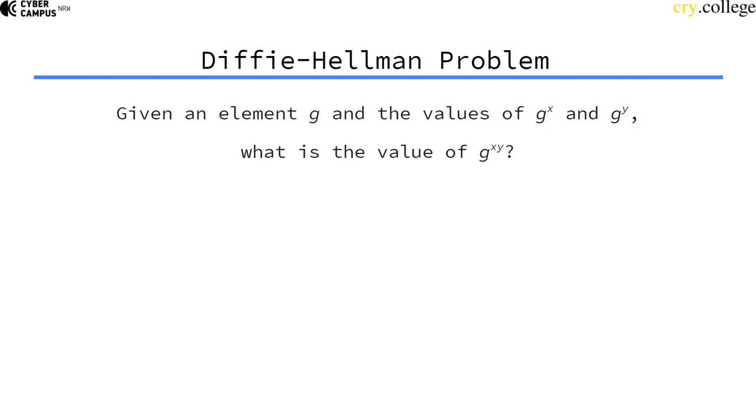Now g is a generator in a finite field, if we talk about finite field Diffie-Hellman, and this is the discrete exponentiation, right?